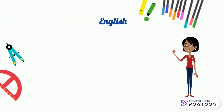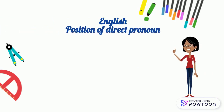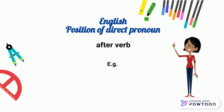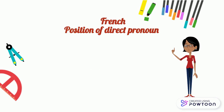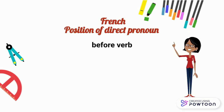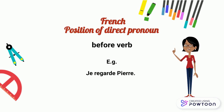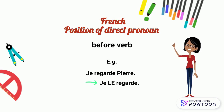In English, the direct object pronouns, like the noun phrase, are placed after the verb — for instance, I am watching Pierre, I am watching him. However, in French, the direct object pronoun is placed before the verb — for instance, je regarde Pierre, but je le regarde.